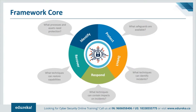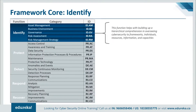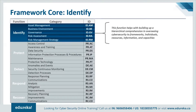The functions are the highest level of abstraction included in the framework, acting as the backbone of the framework Core around which all other elements are organized. The first function is Identify, which helps develop an organizational understanding to manage cybersecurity risk to systems, people, assets, data, and capabilities. Activities in the Identify function are foundational for effective use of the framework. Understanding the business context, resources that support critical functions, and related cybersecurity risks enables an organization to focus and prioritize its efforts consistent with its risk management strategy. Examples of outcome categories within this function include asset management, business environment, governance, risk management, and risk assessment.